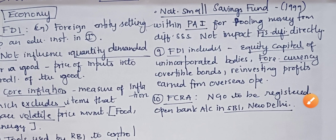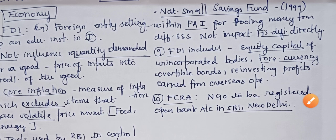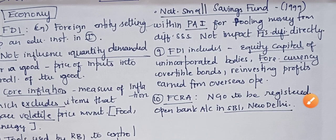The next fact is about FDI. FDI includes equity capital of unincorporated bodies, foreign currency convertible bonds, and reinvesting profits earned from overseas operations. The last fact is about FCRA — the Foreign Contribution Regulation Act. Under this act, only registered NGOs can take funds, and everyone needs to open a bank account at the SBI New Delhi branch, through which all transactions must take place.